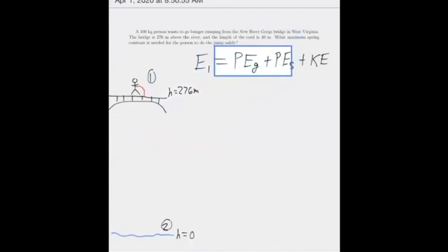So we know that there is going to be some potential energy due to gravity, but the spring or the bungee cord is not stretched at first, right? It's not going to stretch until the person has jumped and gone down at least 40 meters because that's the length of the bungee cord. So I can cross out the spring potential energy, right? So I'd say that's zero.